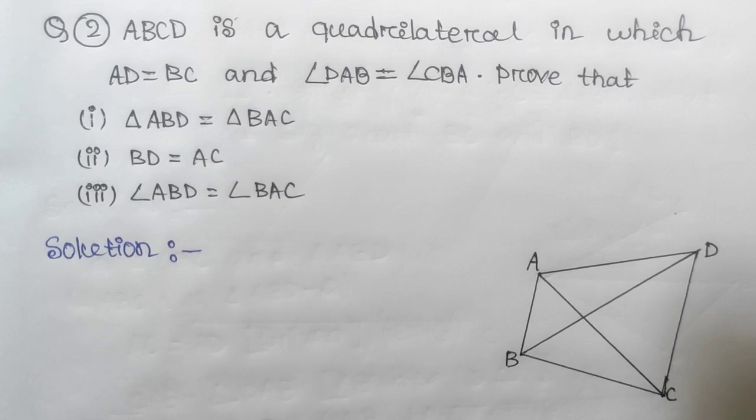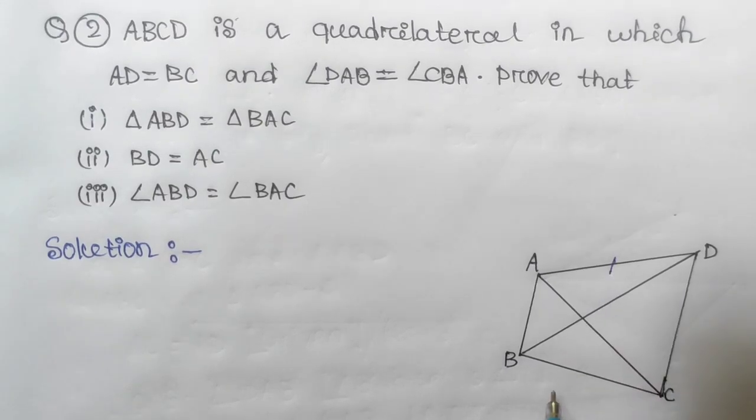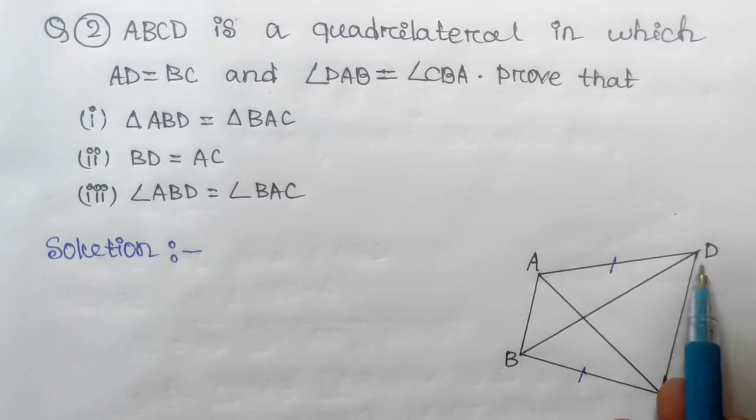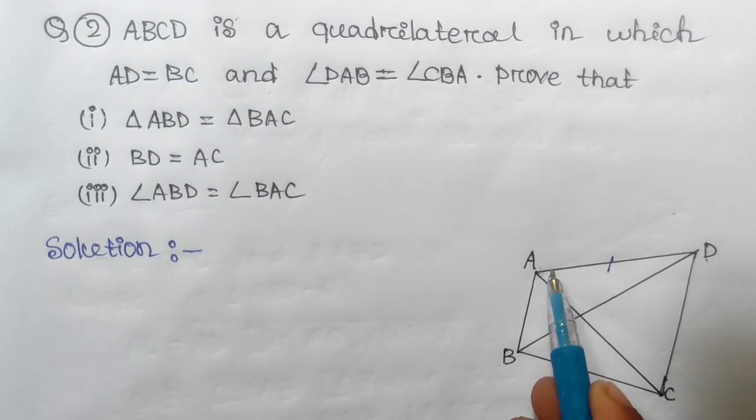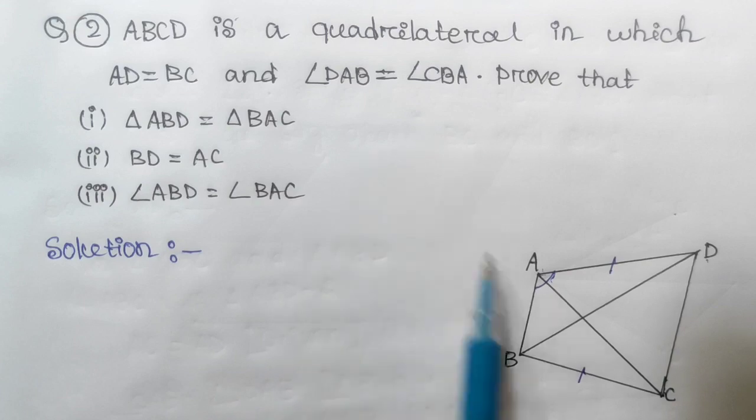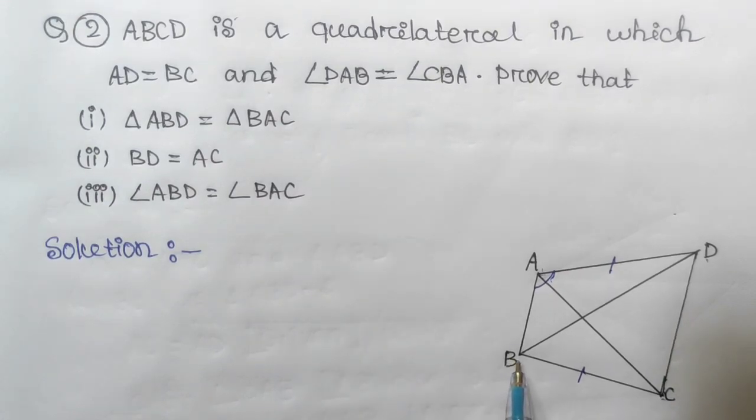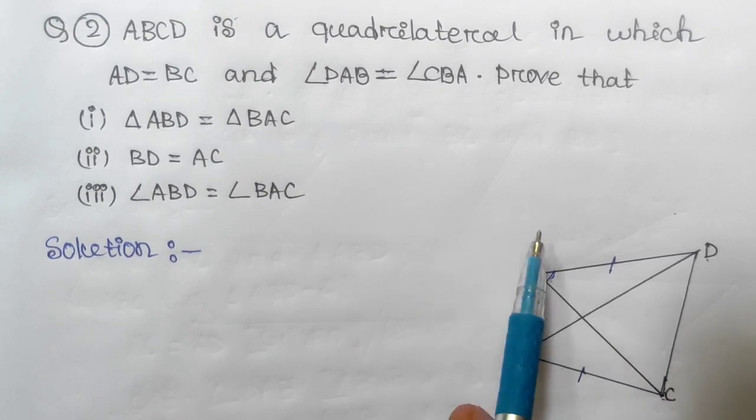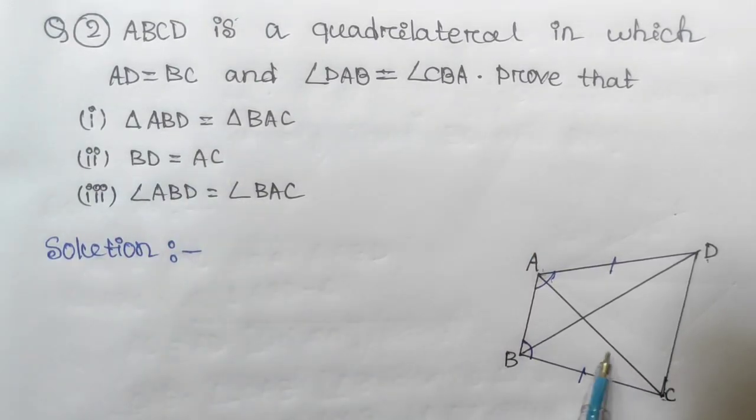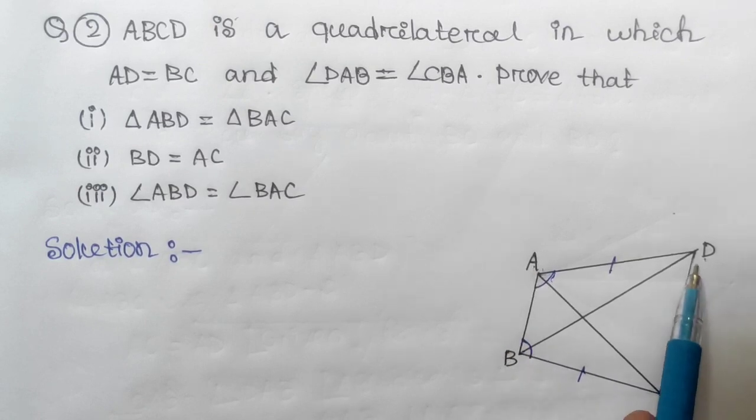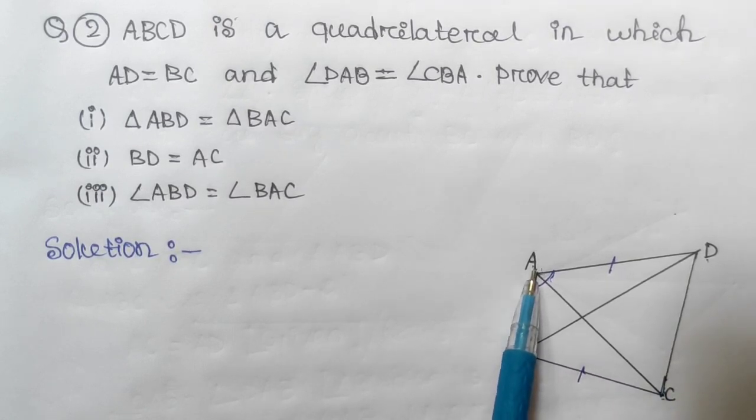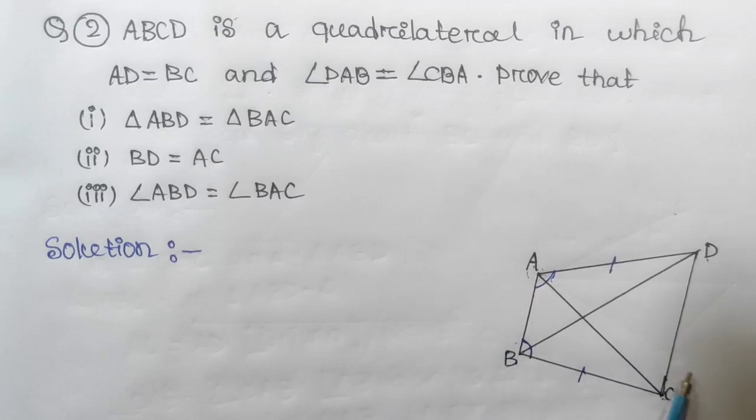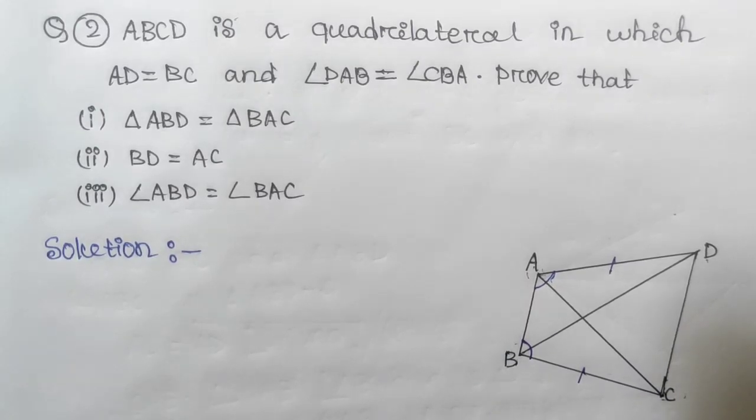AD equals BC, and angle DAB equals angle CBA. Prove that triangle ABD equals triangle BAC. Okay, so first proof term, let's solve this.